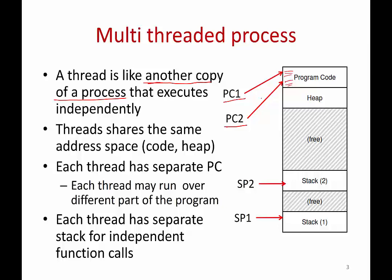Each thread also has a separate stack. It's easy to see why each thread must have a separate program counter — different threads execute like different versions of the program, each at a different point in the code. But each thread also has a separate stack because each thread makes different function calls. Thread one has made some function call with certain arguments; thread two is at a different point of the code and has made a different function call. Therefore different threads have their own separate stacks. In a single-threaded program you had one stack in the memory image; now you will have multiple stack pointers and multiple stacks.